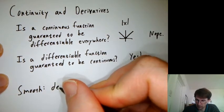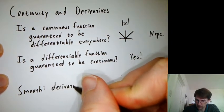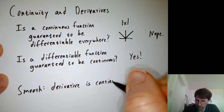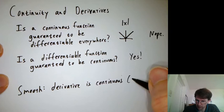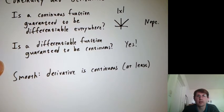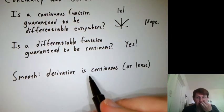Smooth means that the derivative exists and is continuous. So the derivative function is continuous, at least. That's kind of first order smooth, that the first derivative is continuous.